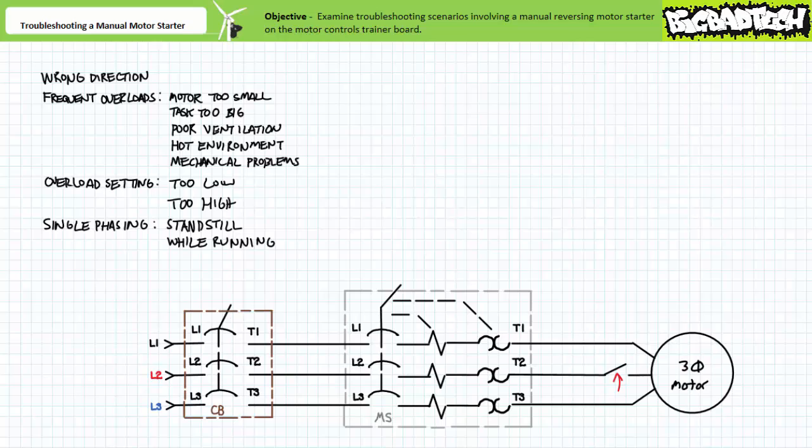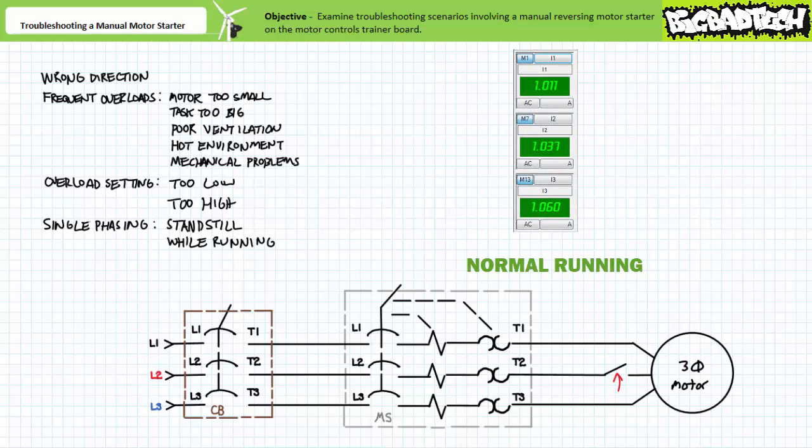The easiest and most non-invasive way to determine which phase is lost is to use an amp clamp or take voltage checks. Here's an amp clamp being used to measure line current of a properly running three phase AC motor. Note they're all relatively equal because the system is balanced. Now, here's an amp clamp being used to measure line current of a three phase AC motor that's been single phased while running. Note current in L1 and L3 are too high and L2 is carrying no current. Phase L2 is obviously the source of our problem.